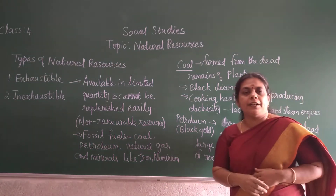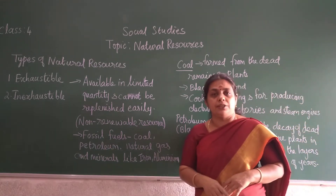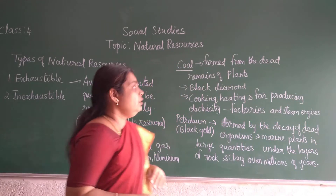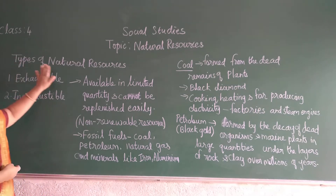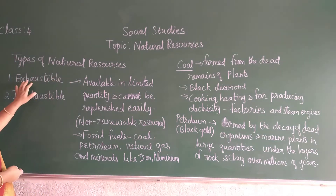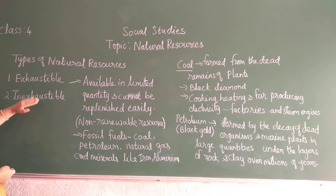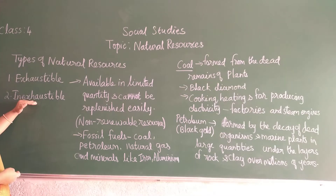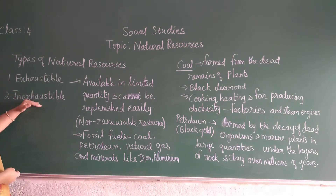Let's continue with the types of natural resources. We will see the types one by one. They are classified into two: one is exhaustible resource and another one is inexhaustible resource.